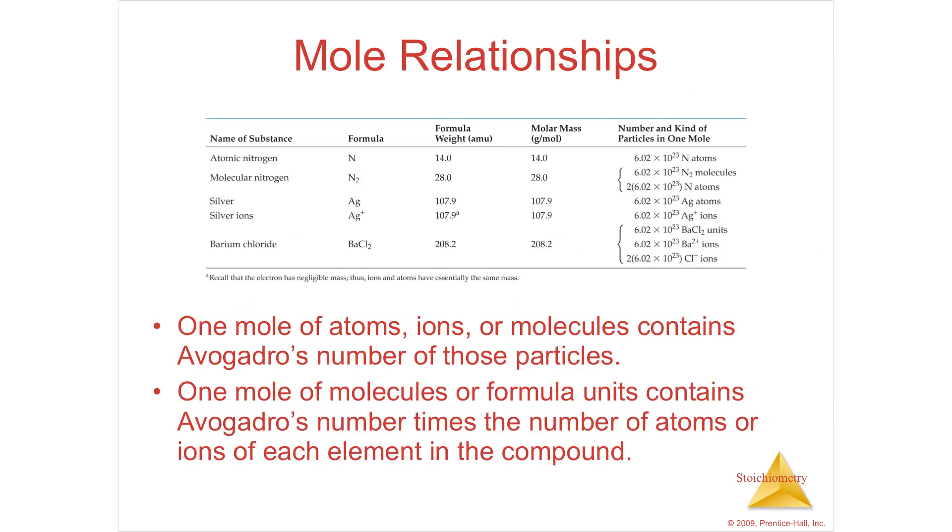The mole relationships is through the periodic table. If you want an atom, a mole of, say, nitrogen, I go to the periodic table, find out 14 AMUs, suddenly just make it 14 grams. 14 grams for every mole and then for every mole I've got 6.02 times 10 to the 23rd. That's how you do it. One mole of atoms, ions, or molecules contains Avogadro's number of those particles. One mole of molecules or formula units contains Avogadro's number, times the number of atoms in the compound.